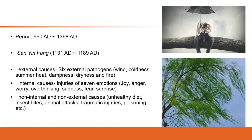In this 12th-century classification system, external causes include diseases due to external pathogens: wind, cold, summer heat, dampness, dryness, and fire. Internal causes include injuries from seven emotions: joy, anger, worry, overthinking, sadness, fear, and surprise — all emotions that can affect human health.